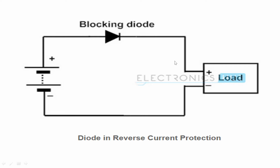Diodes are also used for reverse polarity protection on loads. If you have a battery and connect it backwards, it could damage your components. By putting a blocking diode in series, the current won't flow if the polarity is reversed, saving your electronics.